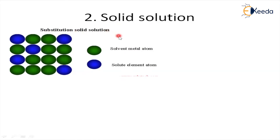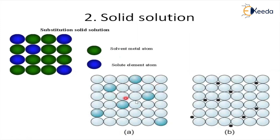In a substitutional solid solution, the entire original atom is replaced with the foreign material — that is, a solute atom. You can see in the image: the original atom is replaced with the foreign material. If a position is occupied with a foreign material in place of the original atom, then we say it is a substitutional solid solution.